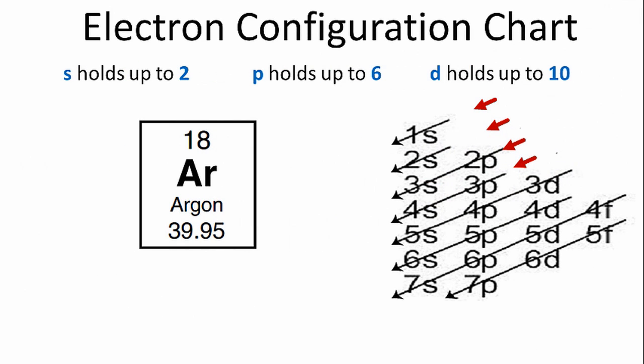We use the chart on the right to help us write the notation for argon. We'll go down the first row, and that we have the 1s. S orbitals can hold up to 2 electrons, so we'll put a 2 after the s.